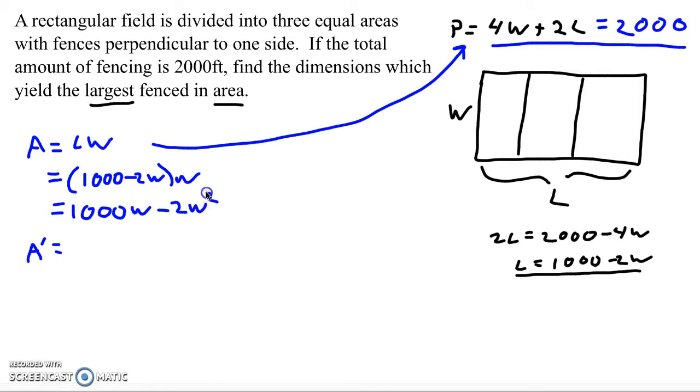And now we can go ahead and start taking derivatives and doing some calculus on this thing. So this is a simple polynomial function, really easy to work with. The derivative is just straight up power rule. That would be 1,000 minus 4W.